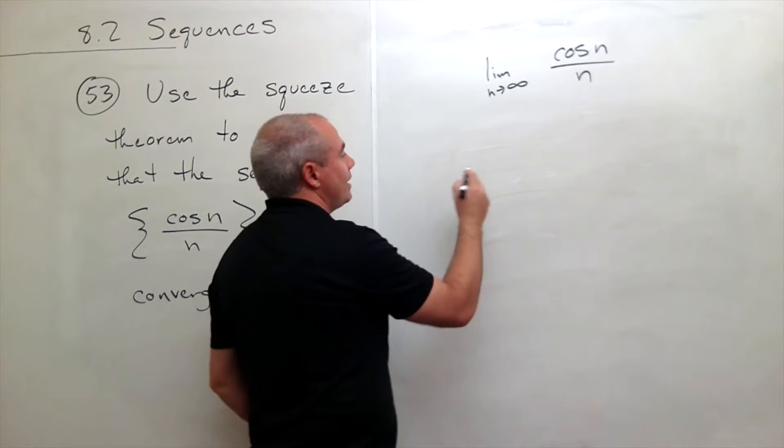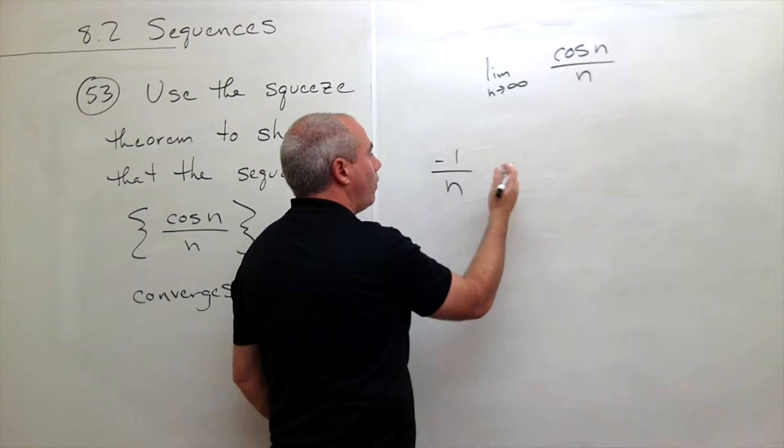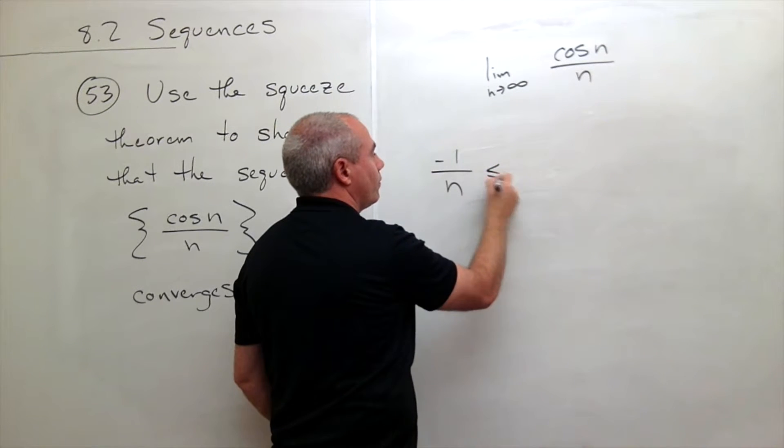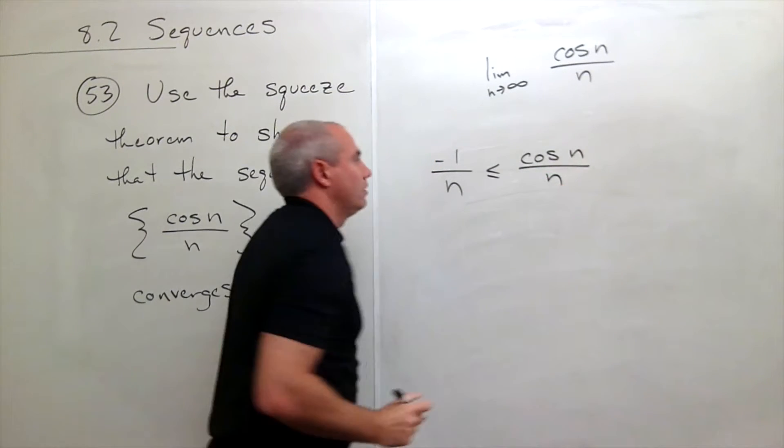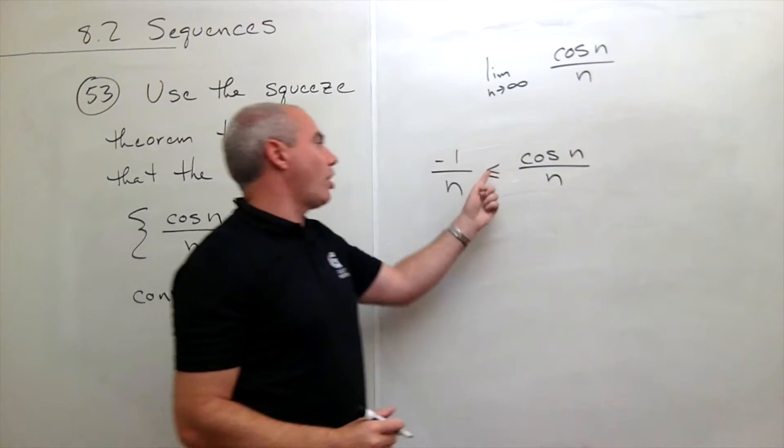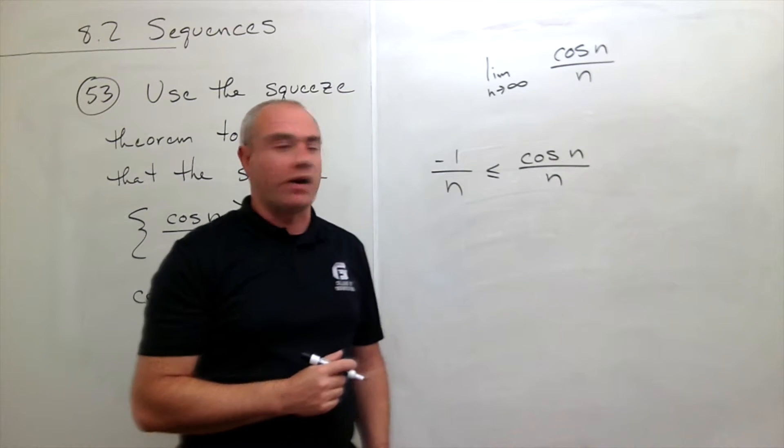So what I can say is that negative 1 divided by n, that's always going to be less than or equal to cosine of n over n. Because negative 1 is always less than or equal to cosine of n, no matter what n is.